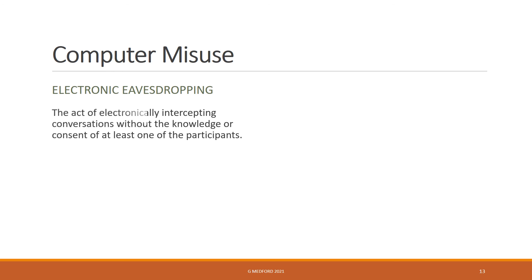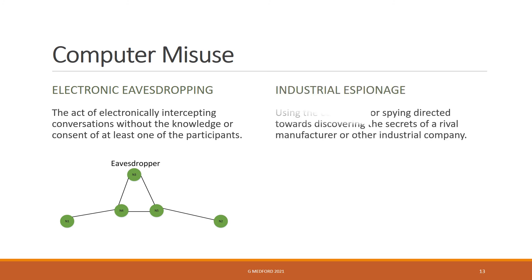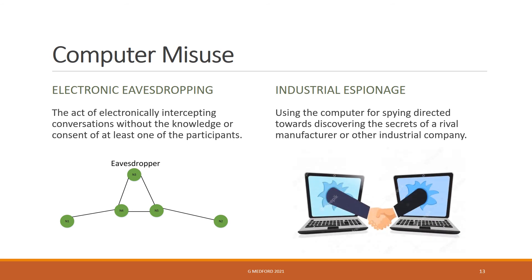Electronic eavesdropping involves the act of electronically intercepting conversations without the knowledge or consent of at least one of the participants. Industrial espionage involves using the computer for spying directed towards discovering the secrets of a rival manufacturer or other industrial company.